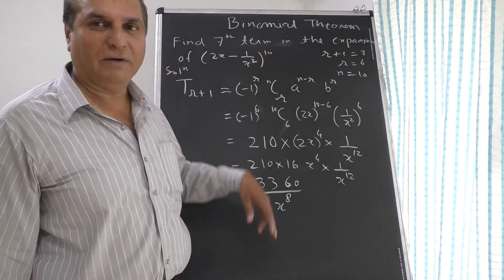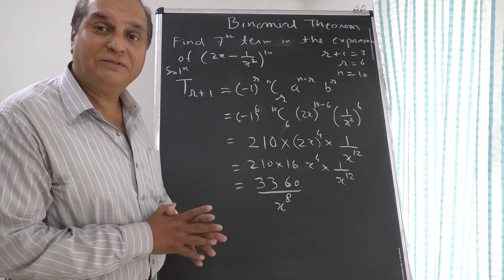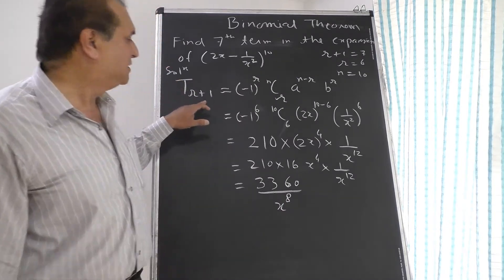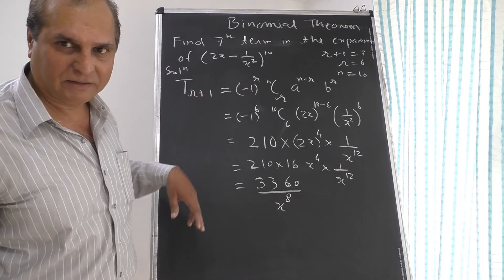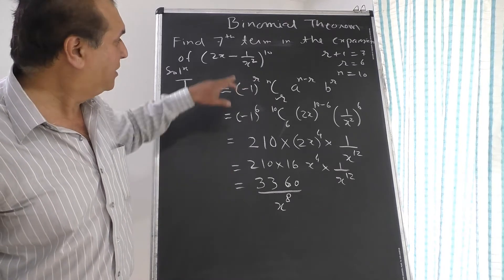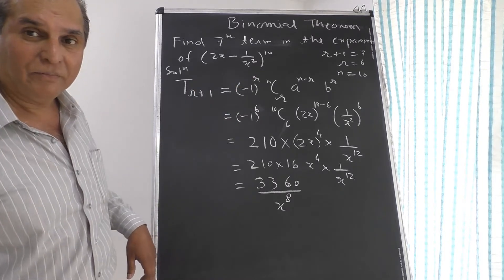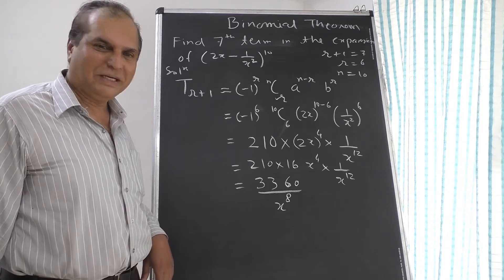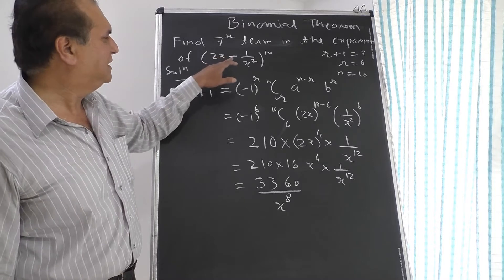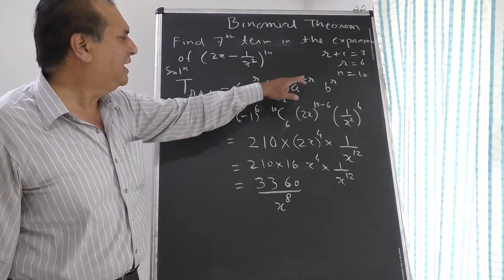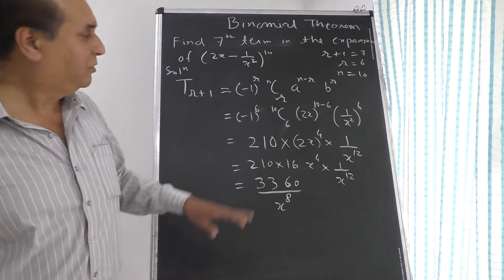n equals 10 is the power of the binomial. Now the general formula for the general term is: T(r+1) equals (-1)^r times nCr times a^(n-r) times b^r. Because of the minus sign, we include (-1)^r. If there is a plus sign, this (-1)^r term is not needed because all terms are positive. Here a is your first term, which is 2x.